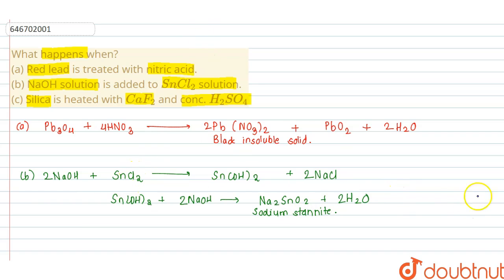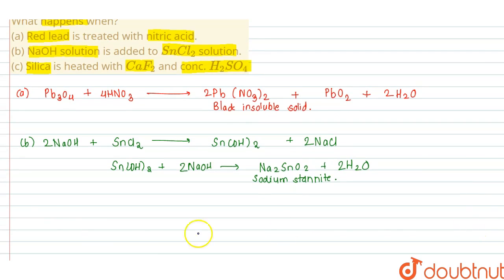And the third reaction is when silica is heated with CaF2 and concentrated H2SO4. So silica is SiO2, which heated with CaF2 calcium fluoride and concentrated sulfuric acid, gives you calcium sulfate CaSO4, then SiF4, and water.